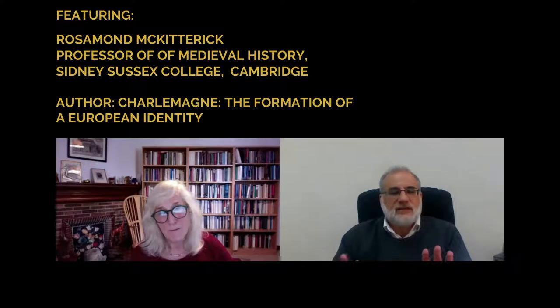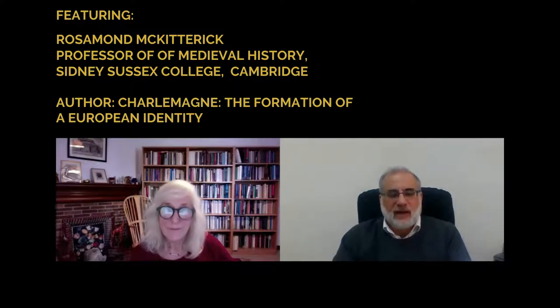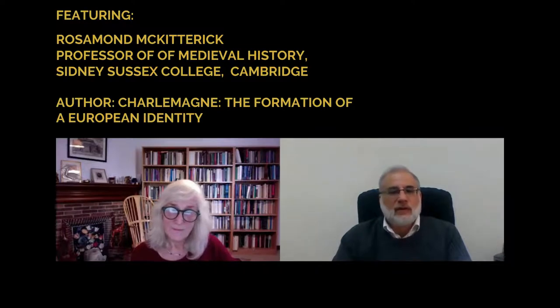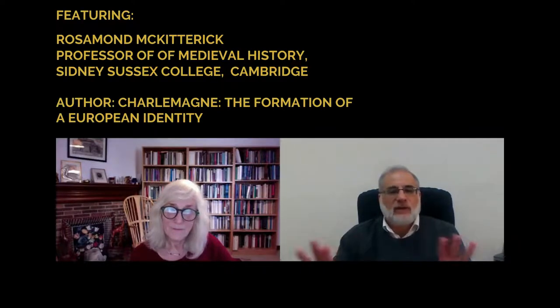Let's just set the scene a little bit for those that might not have the background. What does the map of Europe look like at the time of Charlemagne? What are we looking at in Europe?